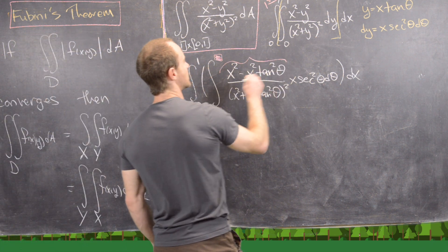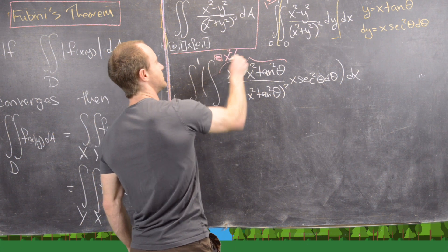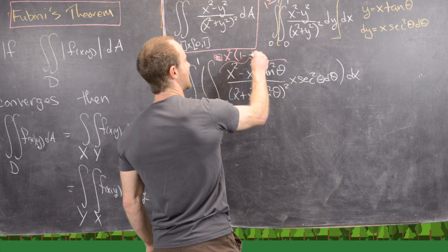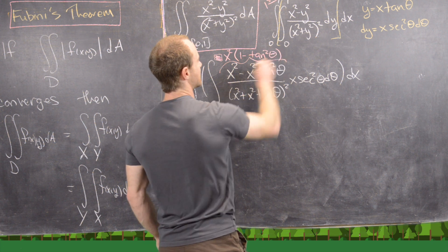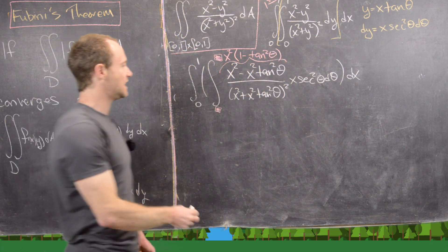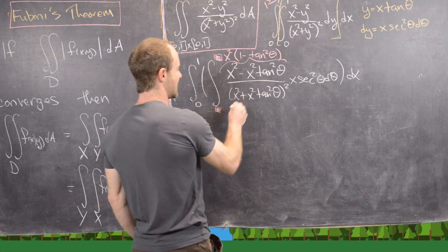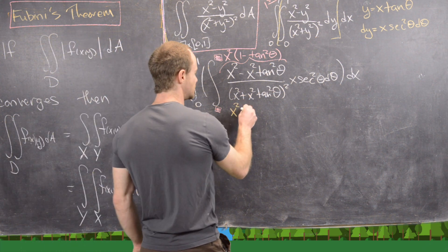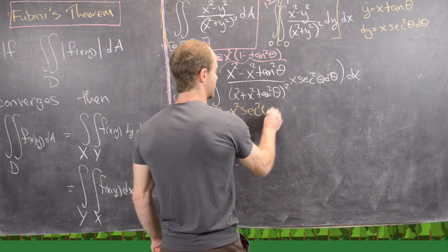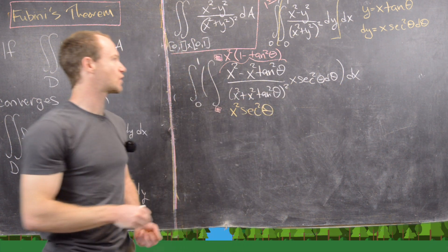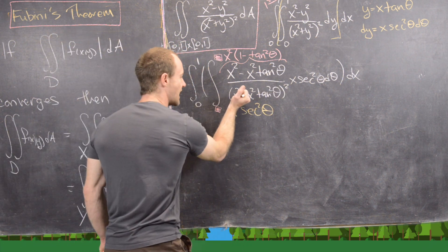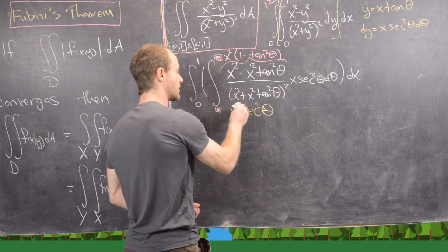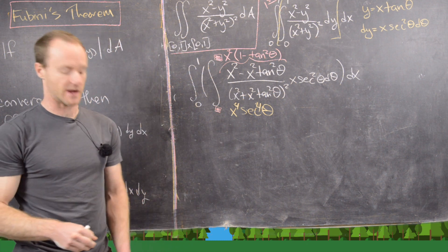Let's simplify. In the numerator we can factor out x², giving x²(1 − tan²θ). In the denominator, factoring out x² gives (1 + tan²θ) = sec²θ, but we're squaring that whole denominator, so we get x⁴ sec⁴θ.